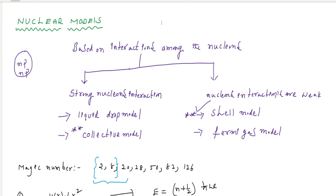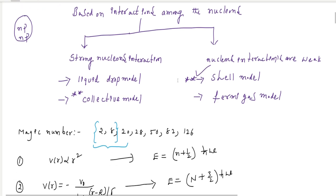Since we don't know the exact nature of the force inside the nucleus, we study the interactions using the shell model. Basically, the shell model is a single-particle model which explains the stability of the nucleus and confirms the existence of magic numbers. The nucleons in the nucleus move independently in a common potential determined by the average motion of all the other nucleons. Protons and neutrons fill the energy levels separately in the nucleus.